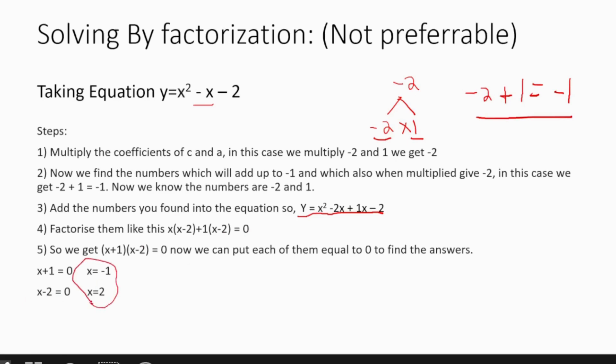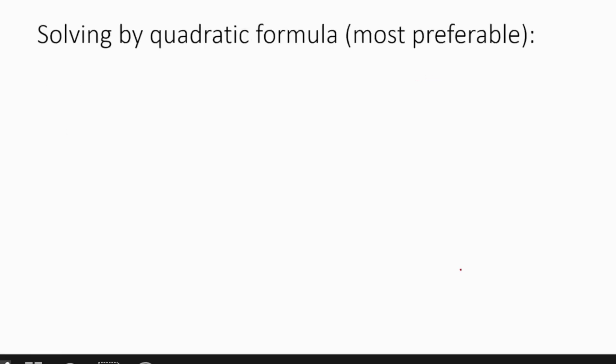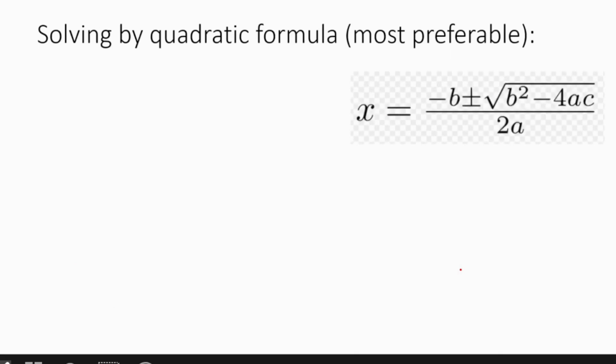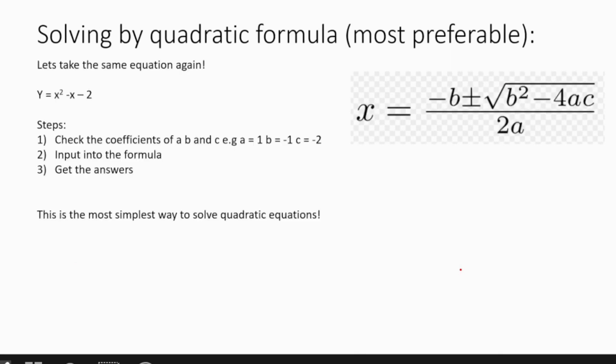Let's move on to the quadratic formula. This formula will be given to you in the formula sheet, so no need to memorize it. Taking the same equation y = x² - x - 2, the coefficients are: a = 1, b = -1, and c = -2. All you need to do is put them into the calculator and you will get your answers.